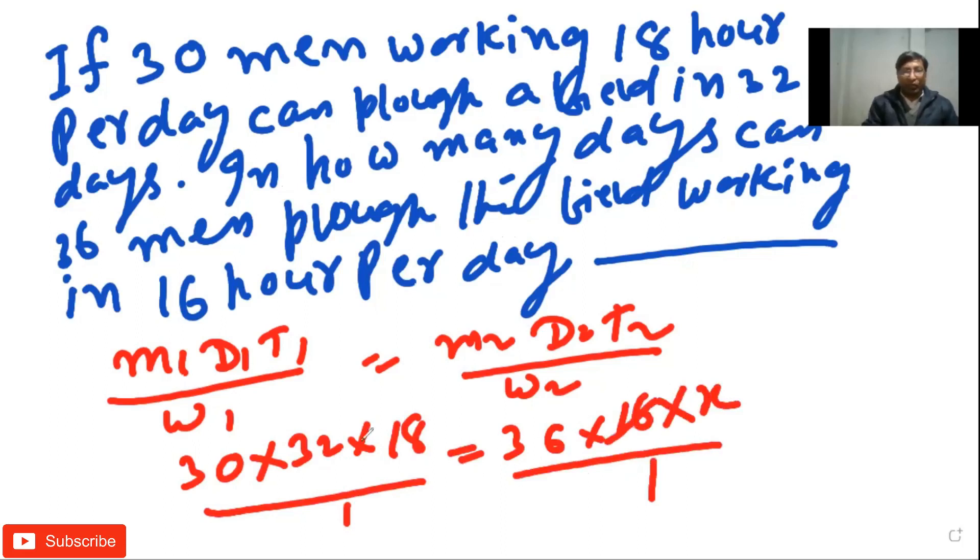30 times 32 times 18 equals 36 times 16 times x. Cancel out common terms. You will get x equal to 30. So the right answer is 30 days. Thank you.